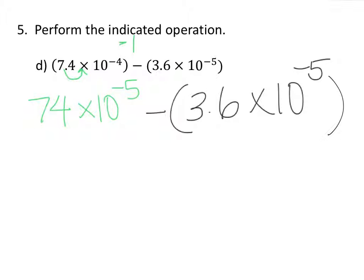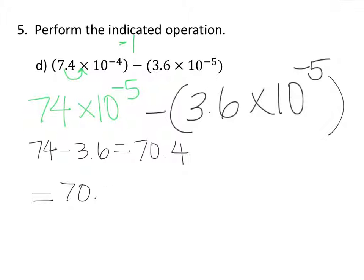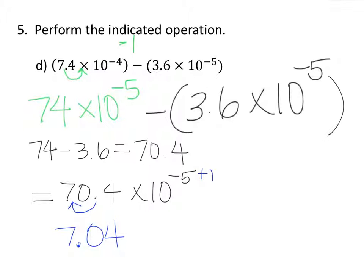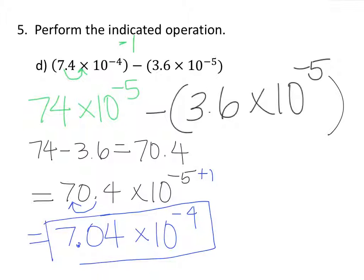Now that we have the same exponents, we can subtract: 74 minus 3.6 equals 70.4. So right now we have 70.4 times 10 to the negative 5 because we keep that exponent. But as you can see, this is not in scientific notation. We need to move the decimal in 70.4 one to the left, so it can be between 1 and 10, which gives us 7.04. But if we move the decimal 1 to the left, we need to add 1 to our exponent. So our exponent becomes 10 to the negative 4. The final answer is 7.04 times 10 to the negative 4.